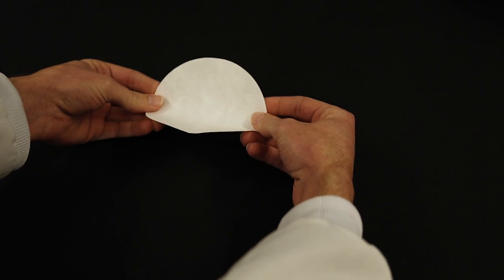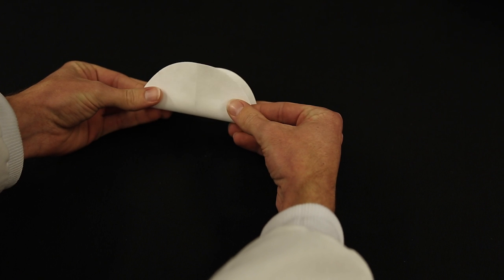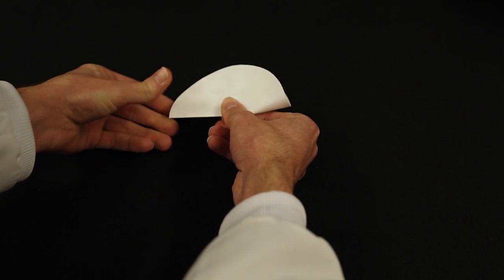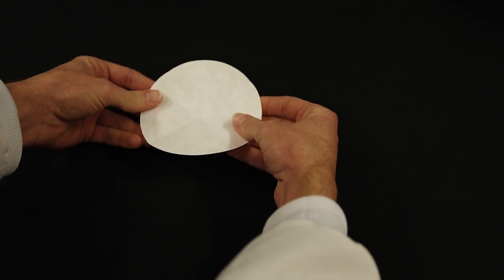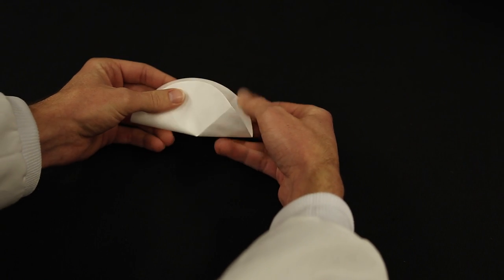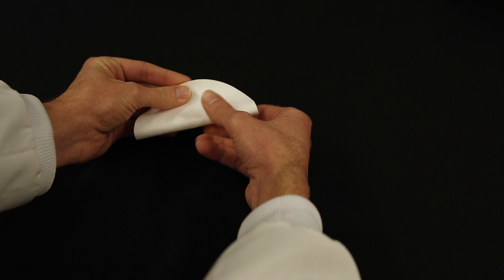Open it up and turn it 90 degrees. Line up the pleats that you just made and make another sharp crease. Open it up. Line the pleats that you just made. That will give you your third crease.